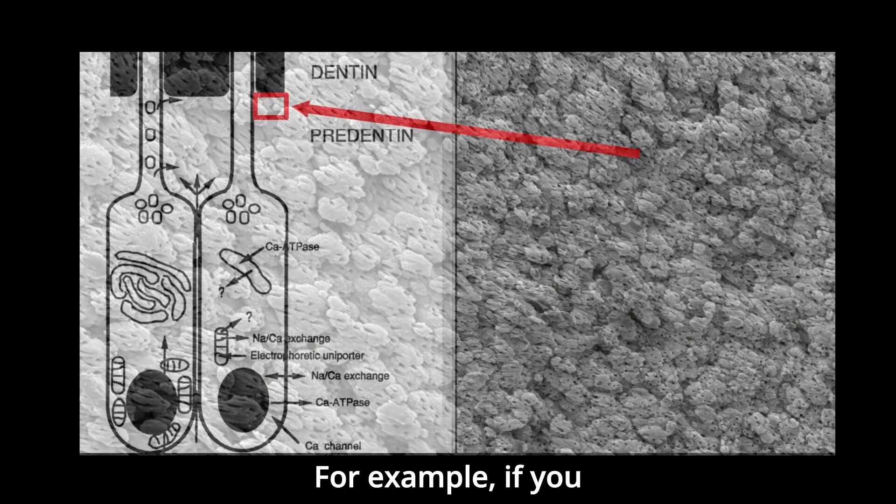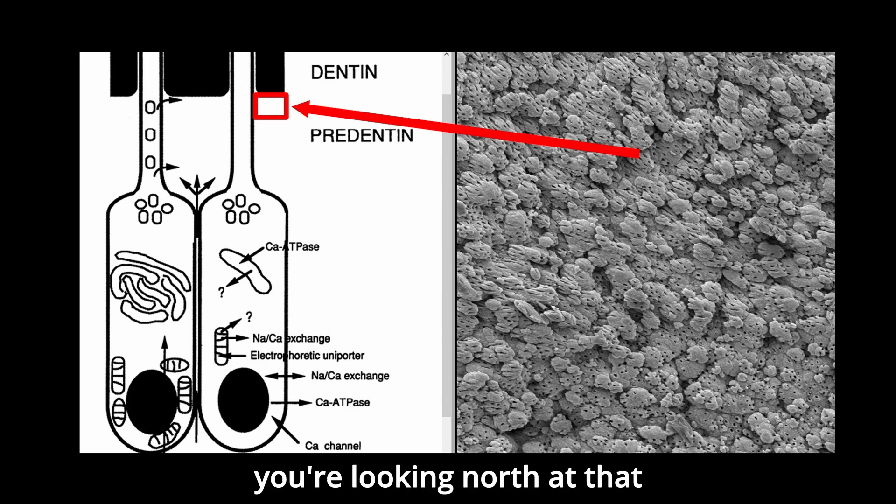For example, if you look at my arrow here, you're looking north at that mineralization front, right at the level where the pre-dentin is partially calcified, and the pre-dentin south of that is gone.